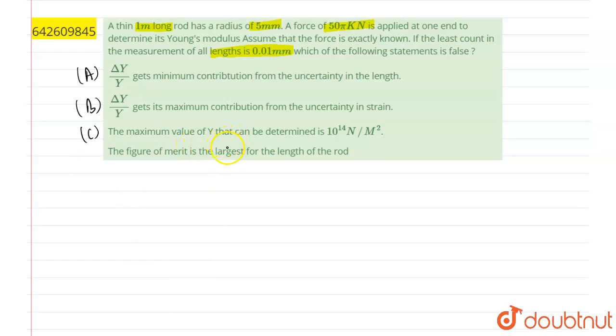Option C: the maximum value of Y that can be determined is 10 raised to power 14 N/m². And option D: the figure of merit, which means L over delta L, is largest for length of the rod.